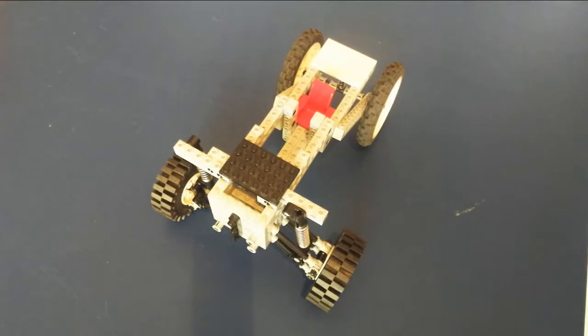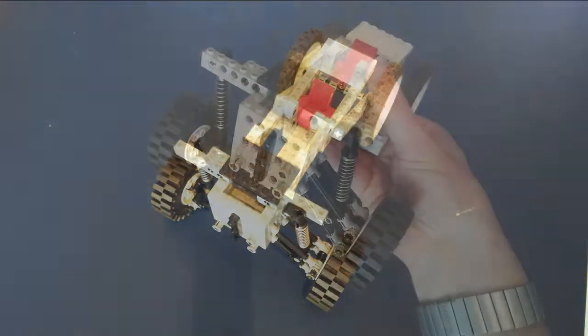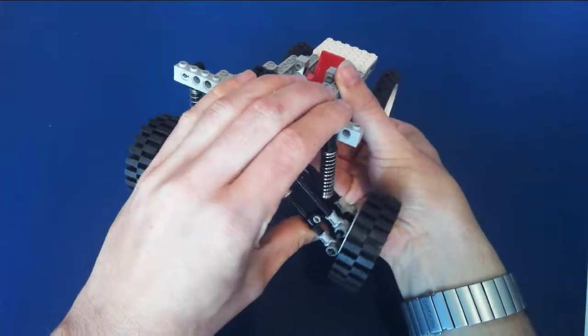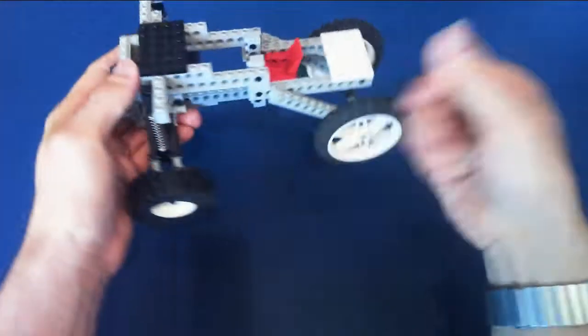Here we have a simplified Lego vehicle that is going to simulate independent and live axle suspension. At the front of the vehicle we can see that articulating the wheel happens independently. That is, the left and right hand sides can move without affecting each other.